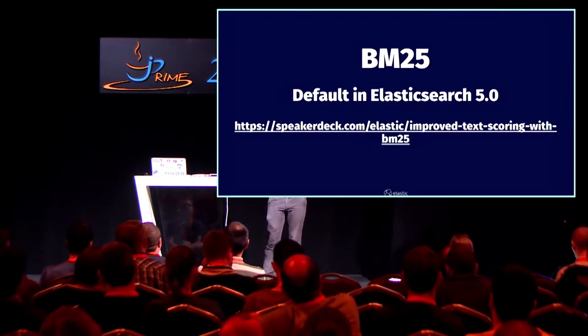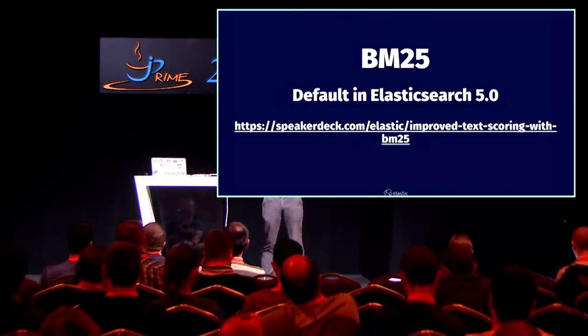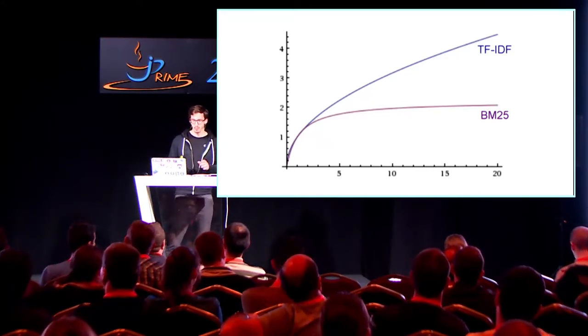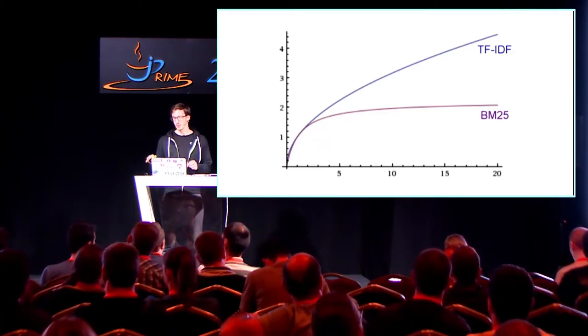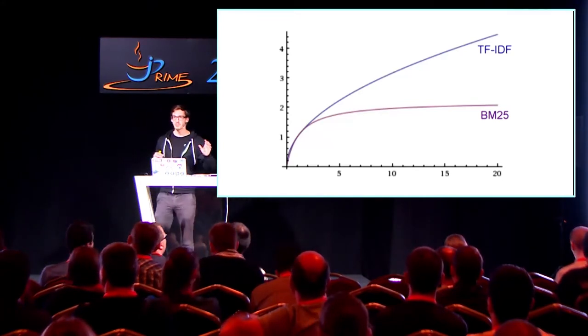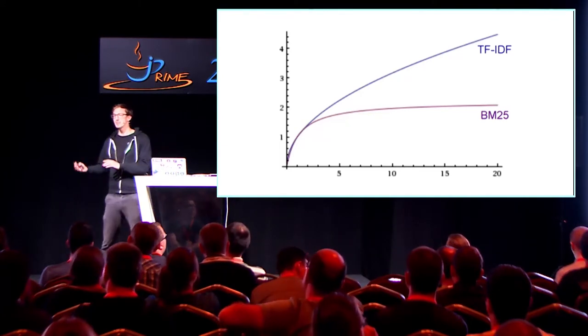If you want to see how that works in detail, one of my colleagues did a talk about just BM25 and how it exactly works. TF-IDF, and also BM25, basically consists of three parts. The first is term frequency: if you're searching for 'father,' a document containing 'father' three times is more relevant than one containing it just once. The more often your search term appears in a document, the more relevant that document will be. With BM25, it was decided that once you hit like five times 'father' in a document, it doesn't really make a difference if it's five times or twenty times — that curve is just flatter.